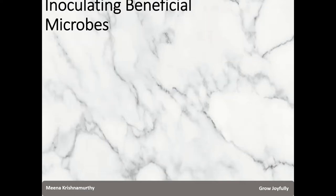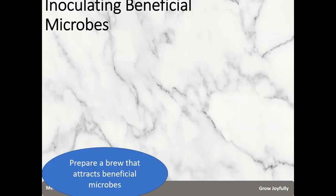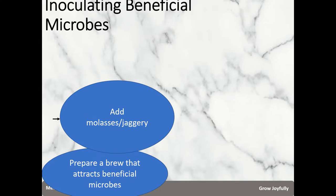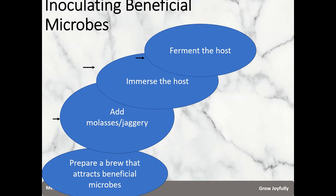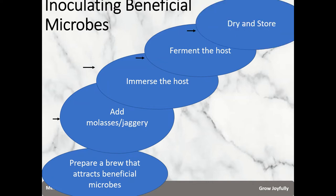Let me explain the inoculation process. We prepare a brew that attracts a small concentration of effective microbes from the environment. To this brew we add molasses or jaggery as food and energy source for the microbes to multiply over the next few weeks. We immerse the host in this liquid mix — the host acts as a residence where the bacteria live. We ferment the host by storing it in airtight containers for two to three weeks, then dry the inoculated host and store it in airtight containers. The microbes are dormant and the shelf life is more than a year.